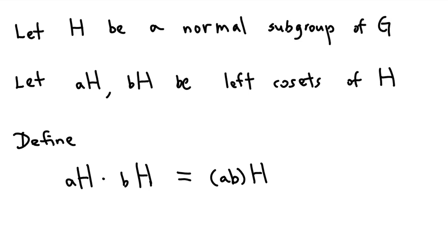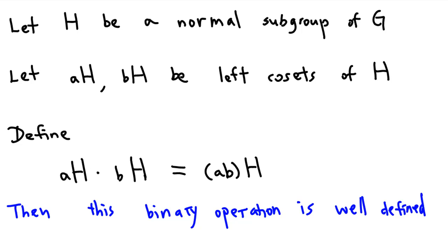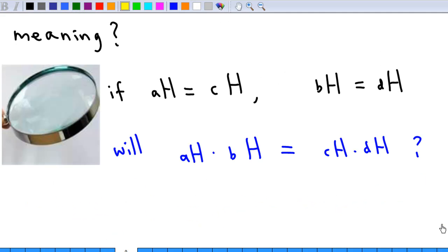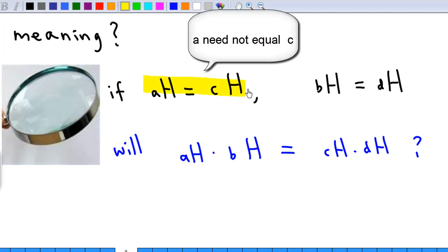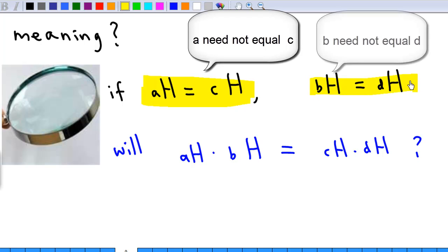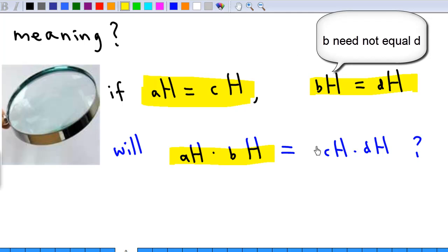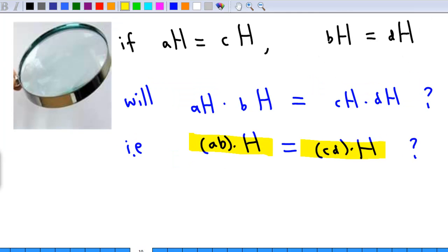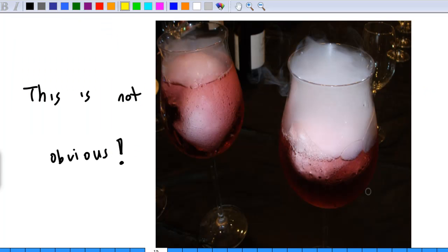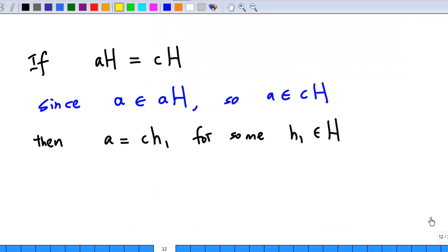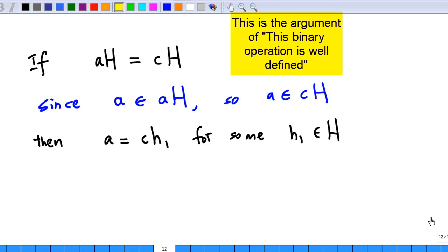Define a binary operation where the left coset AH times left coset BH equals the left coset containing AB. Then this binary operation is well defined. What is the meaning of this? If AH equals CH and BH equals DH, then AH times BH equals CH times DH. In terms of the binary operation, this means the left coset containing AB and the left coset containing CD are equal. This is not obvious, so here is the explanation of why the binary operation is well defined.